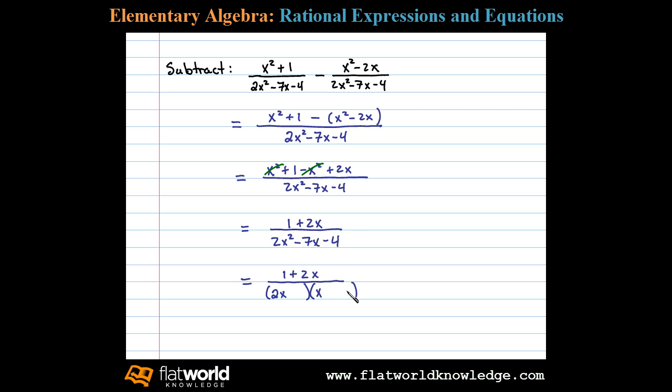Let's use 1 times 4 and say we have x minus 4 and 2x plus 1. Positive 1 times negative 4 is negative 4, and negative 8x plus 1x is negative 7x, so that's factored correctly.